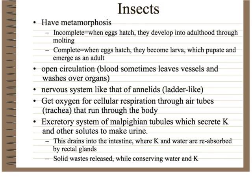Insects have metamorphosis — two types which I'll explain shortly. They have open circulation, which is different from the closed system. They do have a heart that pumps blood, but sometimes blood is just dumped over the organs and washes over them rather than staying in vessels. This is not a very efficient form of moving blood around the body — a closed circulatory system is far more efficient — but it works for insects.